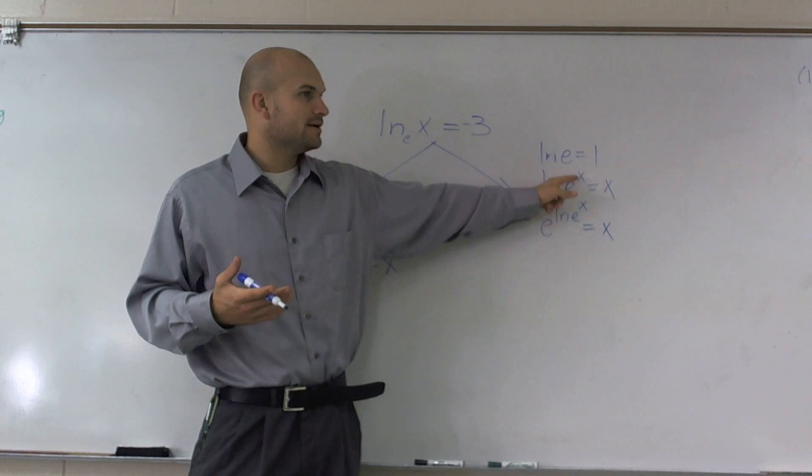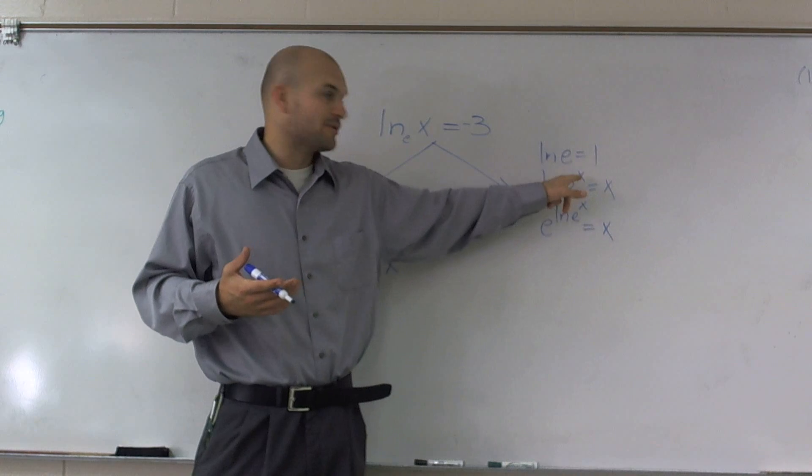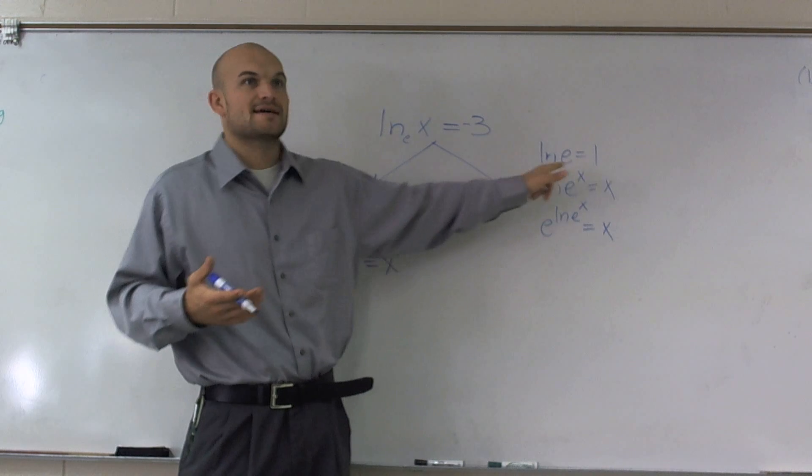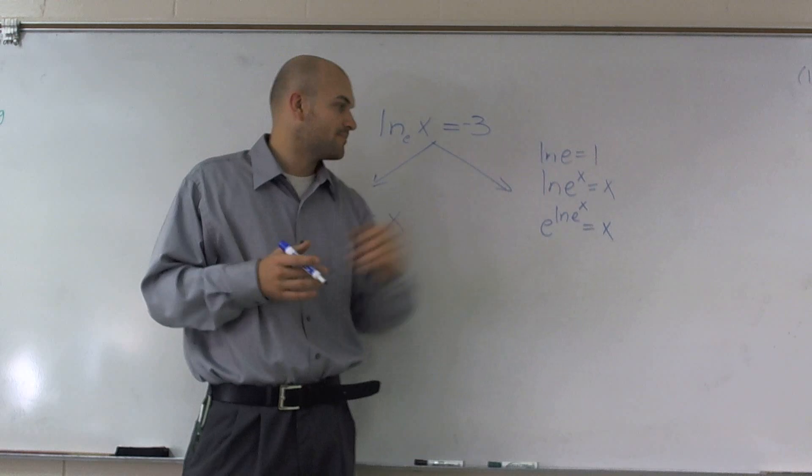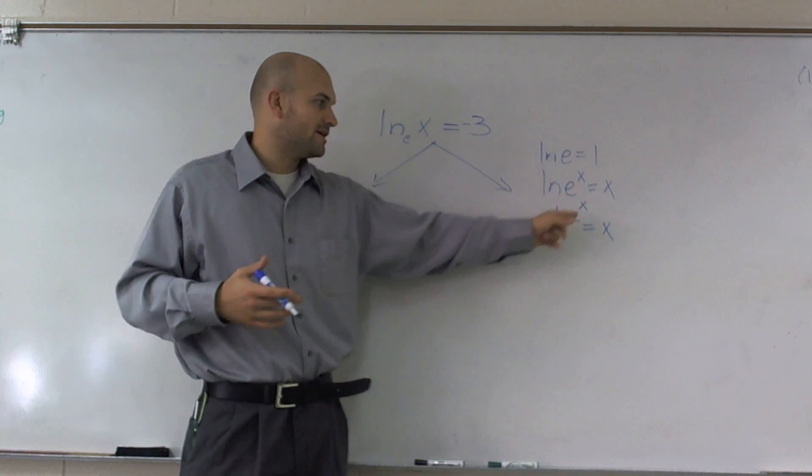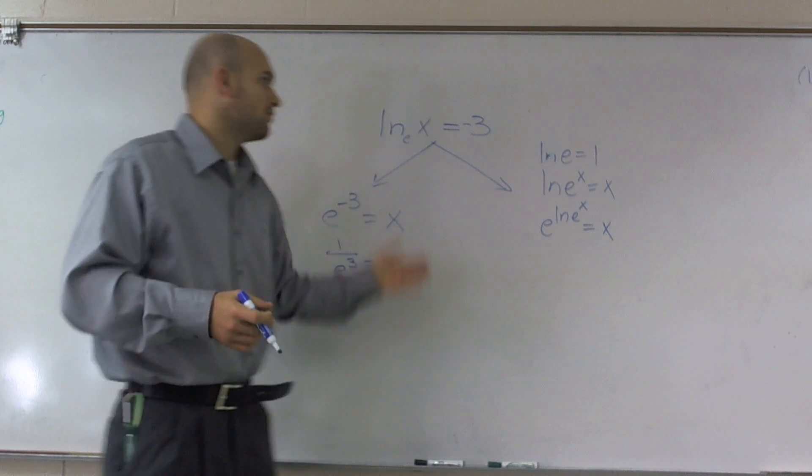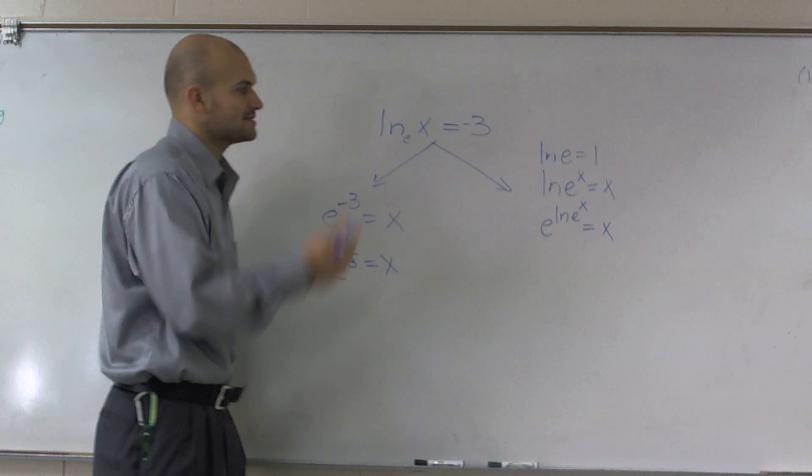Well, if that equals 1 and that is raised to an exponent, it's going to equal x. Because remember, your x you could bring in front, so it would be x times 1, which obviously equals x. Then over here, it works the other way. If I take e and I raise it to the ln of x, that cancels out and I'm just left with x.